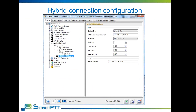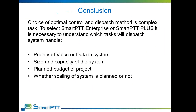The final step of hybrid configuration is establishing MNIS and DDMS connections for data transmission. Here you will need to add the addresses of the PCs running the MNIS and DDMS services.